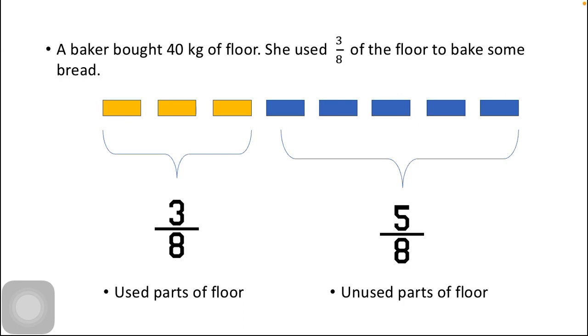The unused parts of flour is represented through 5/8, because out of 8 bricks, only 5 are the unused ones. So the total number of units equals 8.